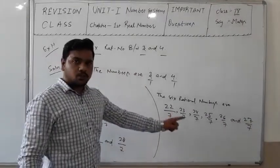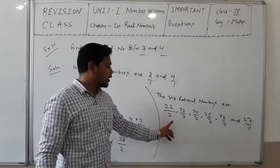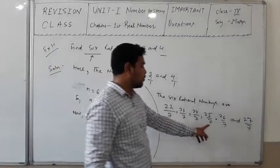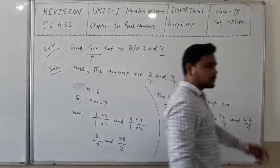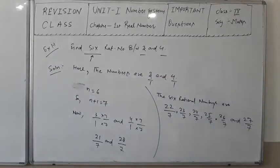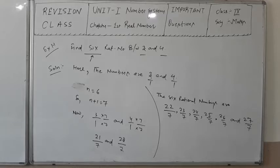You can observe that there are 6 rational numbers between 3 and 4: 22/7, 23/7, 24/7, 25/7, 26/7, and 27/7. So we have successfully found 6 rational numbers between 3 and 4.